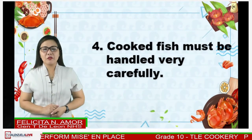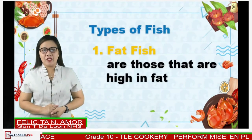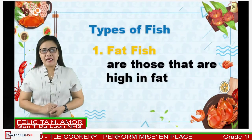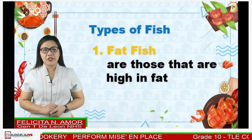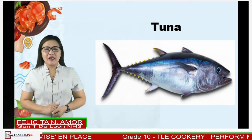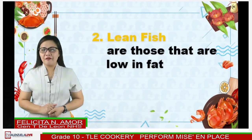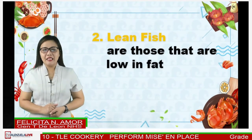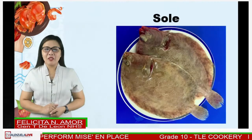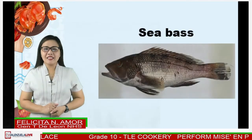Number four: cooked fish must be handled very carefully. Also, keep in mind that there are types of fish. Number one, fat fish — those that are high in fat, with a fat content between 10 to 25 percent. Examples are salmon, tuna, mackerel, and trout. Another type is lean fish — fish that are low in fat, with less than 5 percent fat content, also called white fish. Examples are sole, cod, red snapper, and sea bass.